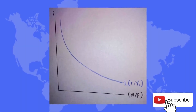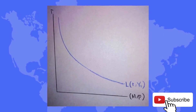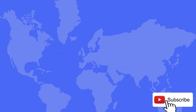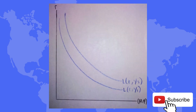If depicted, the money demand curve has R on the Y-axis and M/P on the X-axis. For Y equal to Y1, the demand curve slopes downward — when R is low, demand is high, and when R is high, demand is low. When income increases from Y1 to Y2, the entire demand curve shifts to the right.